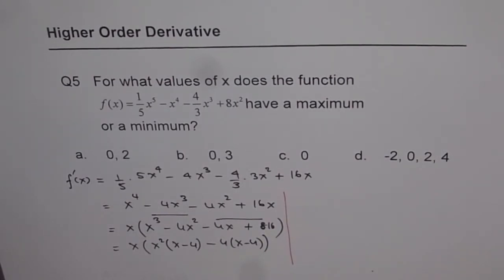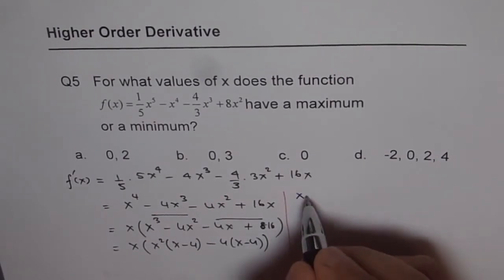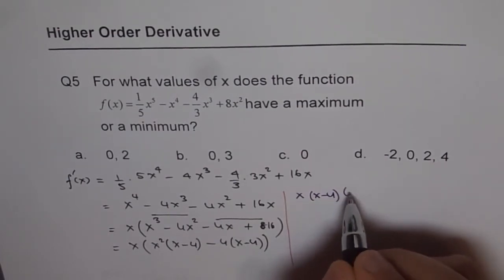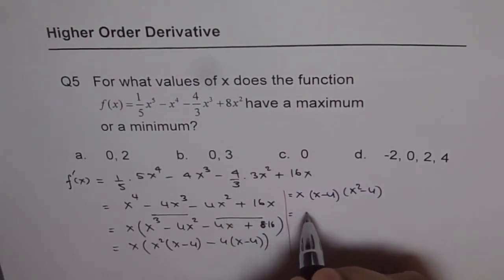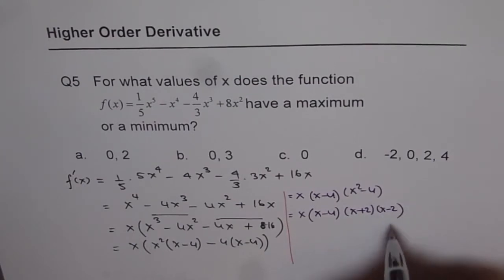Let's do it on the right side. So we have x times (x - 4) common, which is (x - 4), and we are left with x^2 - 4. And this equals x(x - 4)(x + 2)(x - 2).